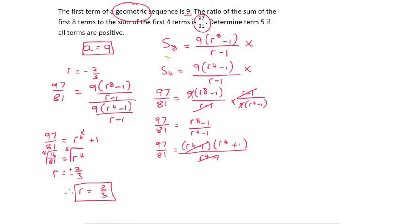So therefore, R is only going to be positive 2 over 3. But now we're not done because they said determine term 5. So to determine term 5, we can use the TN formula. And we're trying to find term 5. Now, A, they told us, is 9. R, we just found, is positive 2 over 3 to the power of 5 minus 1.